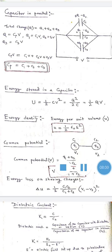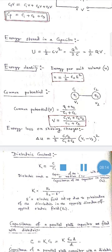The energy stored in a capacitor is U = ½CV² = Q²/(2C) = ½QV. The energy density, which is energy per unit volume, is given by U = ½ε₀E², where E is the electric field inside the capacitor.